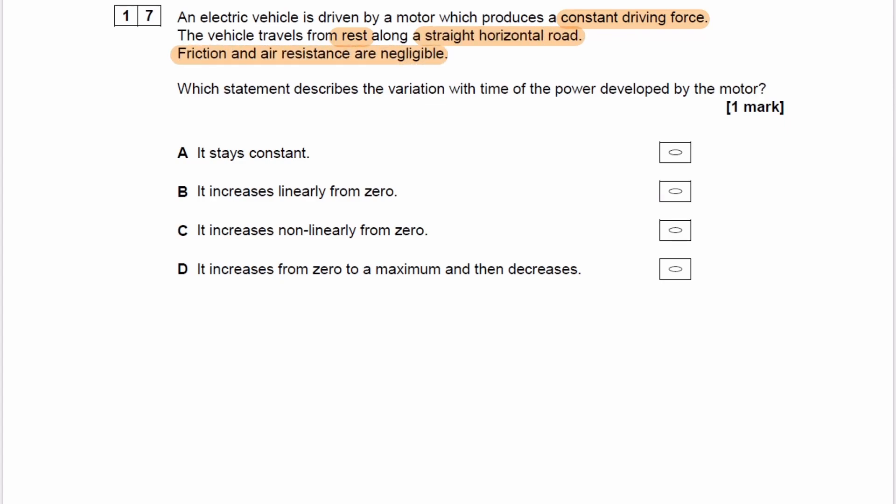We're trying to find out which statement describes the variation with time of power developed by the motor. So what that last statement means is we are trying to figure out what would be the relationship of power against time. If you plotted a graph of power against time, what would that look like?